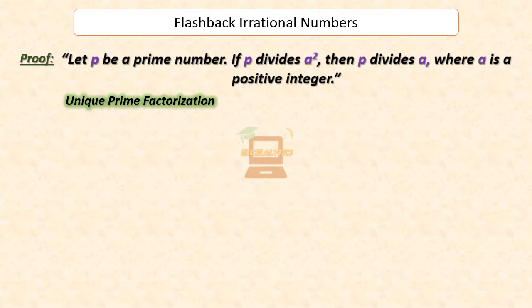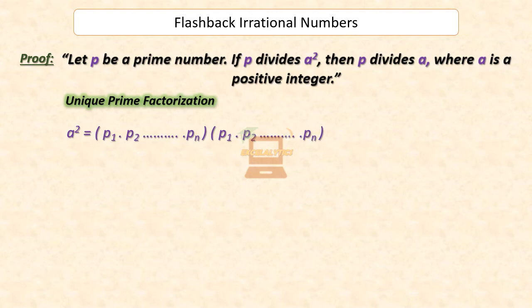So, A squared will be equal to P1 × P2 × ... × Pn × P1 × P2 × ... × Pn, which equals P1² × P2² × ... × Pn².